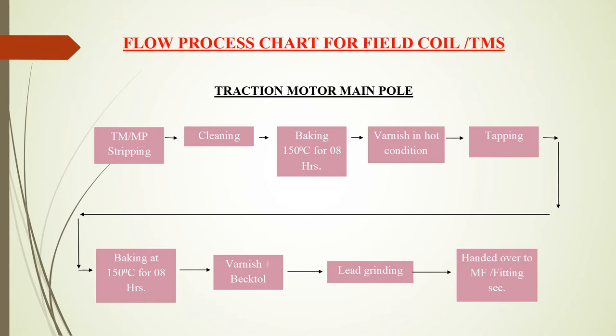After that, taping is done wherein captain tape, glassica D-tape, and glass fiber tape are applied in their respective orders. Again, the main pole is baked at 150 degrees Celsius for 8 hours. This is again followed by varnish H71 and a layer of Ultimake or Red Bechtol. The lead of the main pole is ground to remove carbon rust so that the current flow is proper. Thereafter, the main pole is handed over to the magnet frame fitting section.